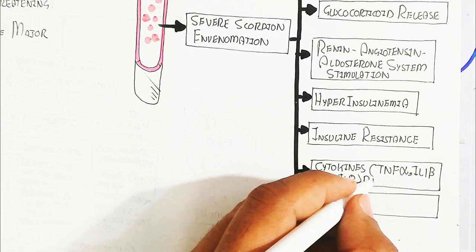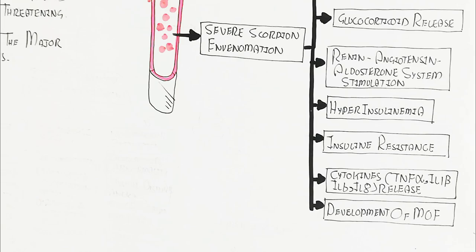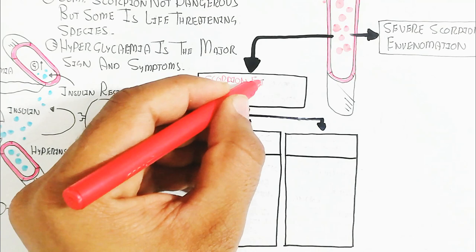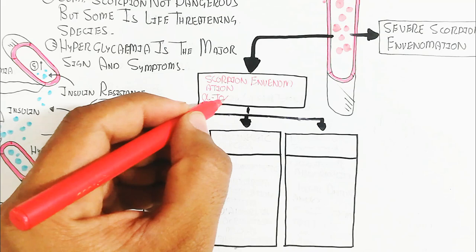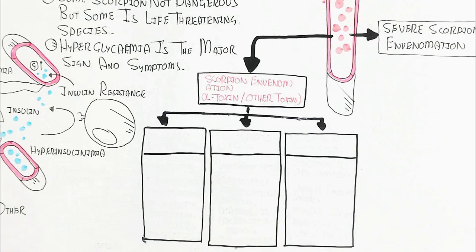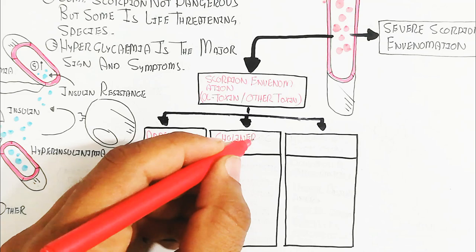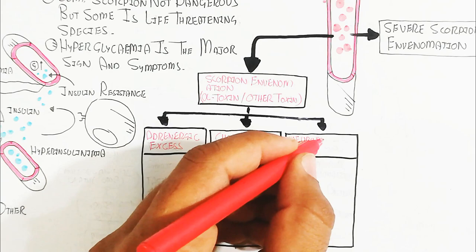In scorpion envenomation, alpha toxin and other toxins activate both sympathetic and parasympathetic systems due to neurotransmitter release caused by increased intracellular calcium. This results in adrenergic excess and cholinergic excess. The neuromuscular excitation occurs due to depolarization and calcium-driven neurotransmitter release.